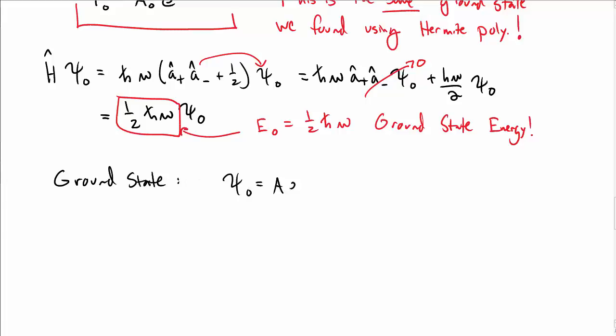So what we found is the ground state to the quantum harmonic oscillator. It's A e^(-1/2 mω/ℏ x²) with the ground state energy one half ℏω.